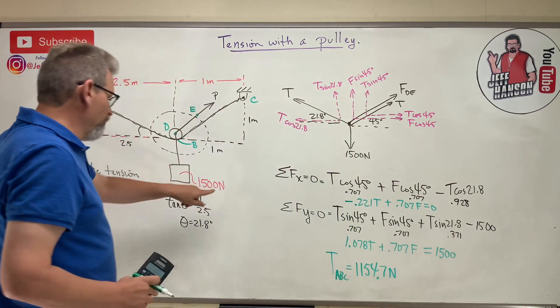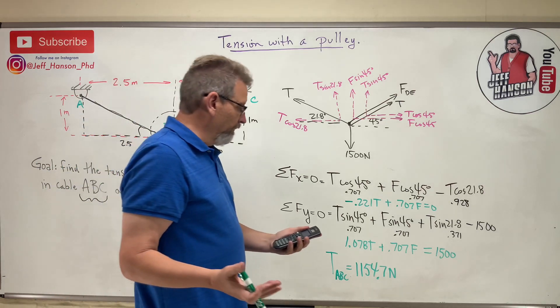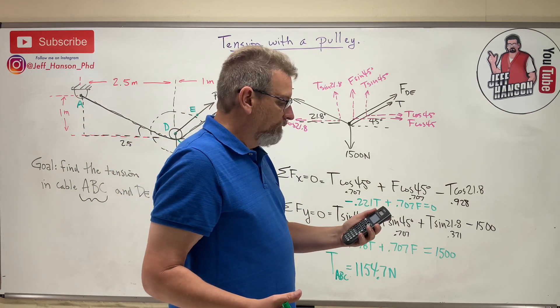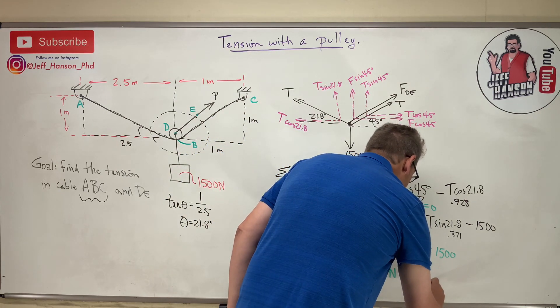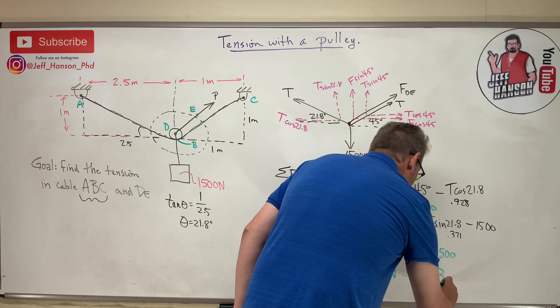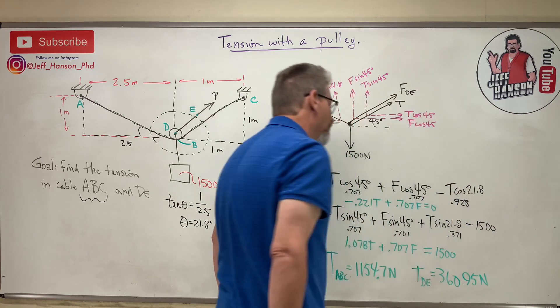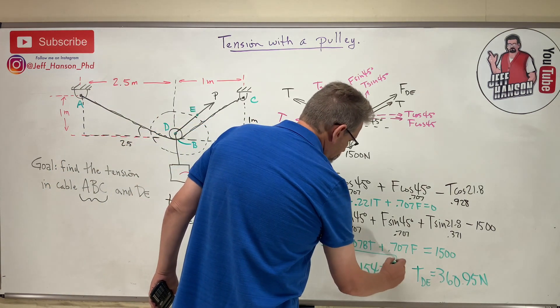Okay, and that's in Newtons. And then the next one - it gave it to me also. They gave me the value for F and it's 360.95. So TDE is 360.95 Newtons.